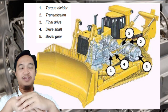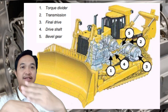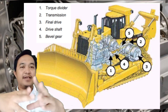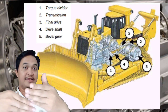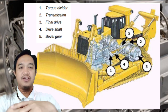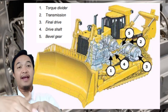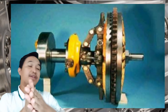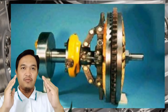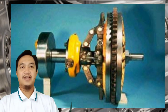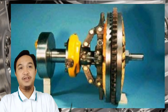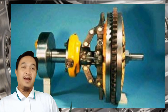Pertama-tama kita akan membahas clutch dan jenis-jenisnya. Clutch berfungsi sebagai penerus tenaga dari engine ke transmisi. Komponen clutch ini dibagi menjadi beberapa jenis atau tipe.